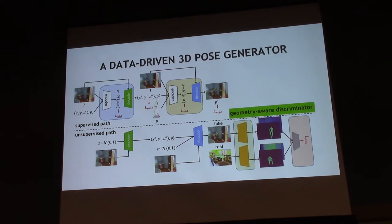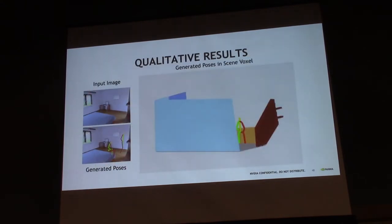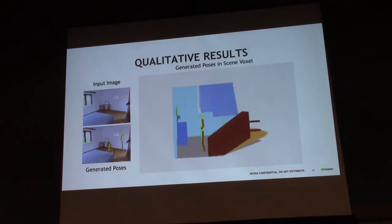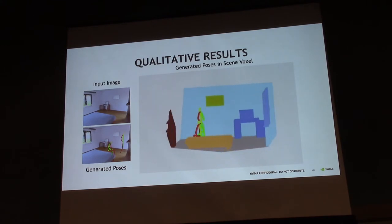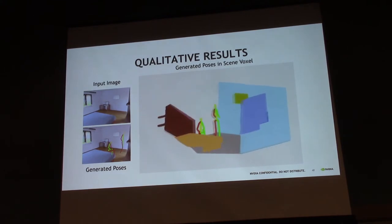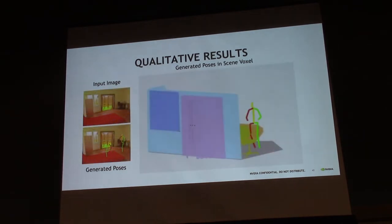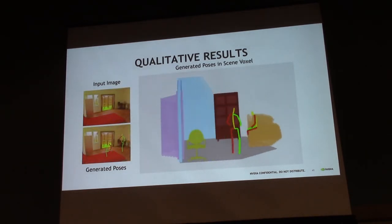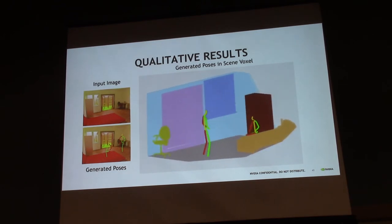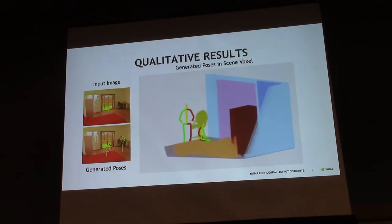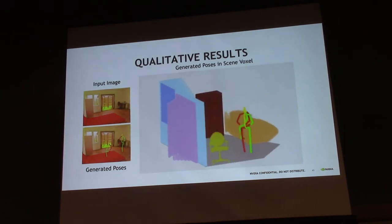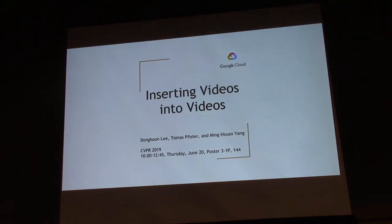We found this discriminator is amazingly effective at correcting geometry relations. Here are some generated poses shown in the image and in the scene. We can see that both gestures and geometry of the generated poses fit well to the scene image in both 2D and the corresponding 3D world space.